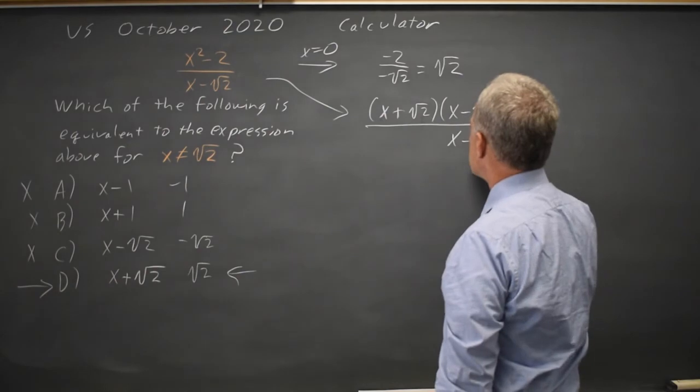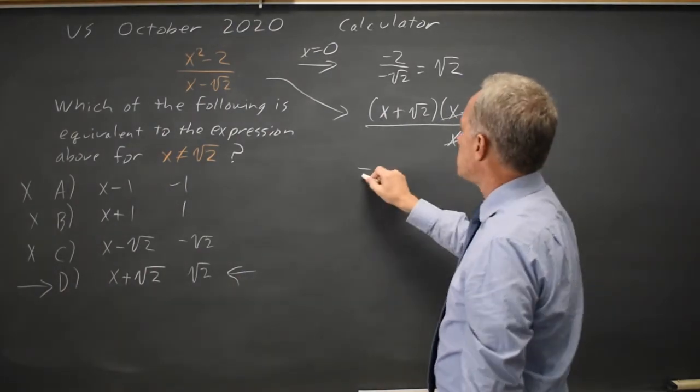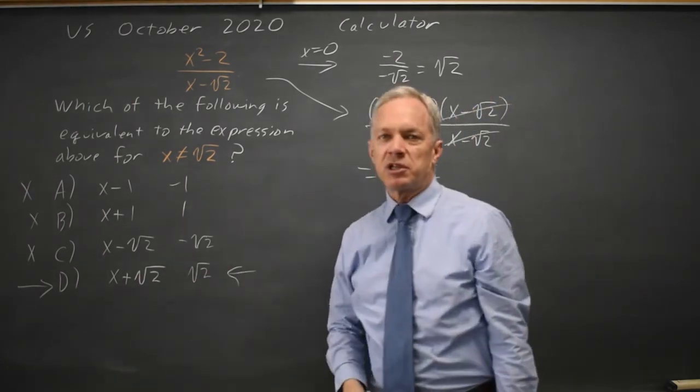And that's over x minus root 2. Any expression over itself is 1, so this simplifies to x plus root 2. And that is the answer I found by plugging in 0.